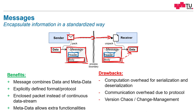Then, versioning could be chaotic: if you have different versions of message formats, they could conflict with each other and you need good change management to tackle this versioning chaos. The data format must be exactly defined, even down to the last bit — think of Unicode versus ASCII encoding, little-endian versus big-endian, how doubles and floats are encoded, and whether you use 32-bit or 64-bit integers.